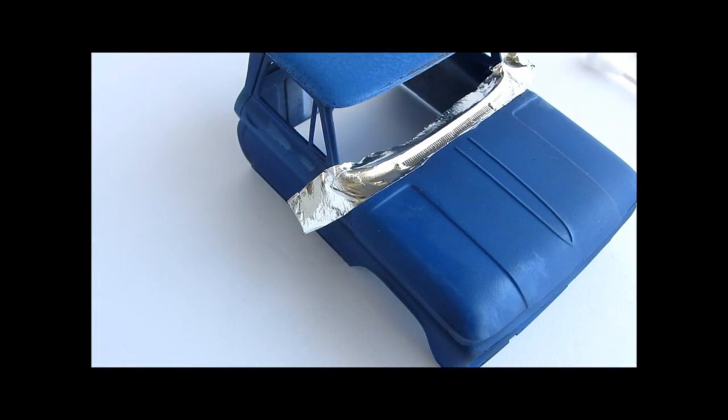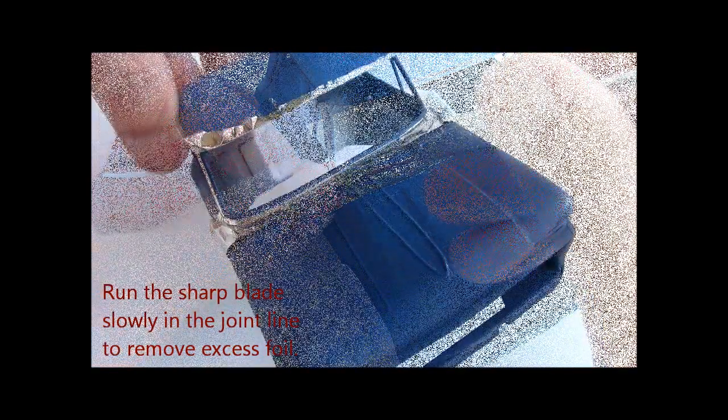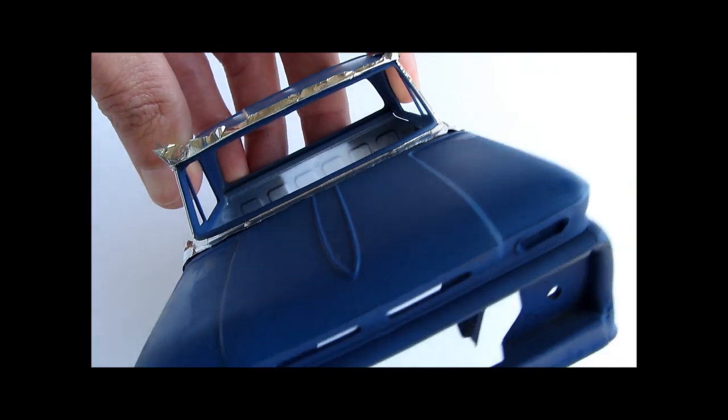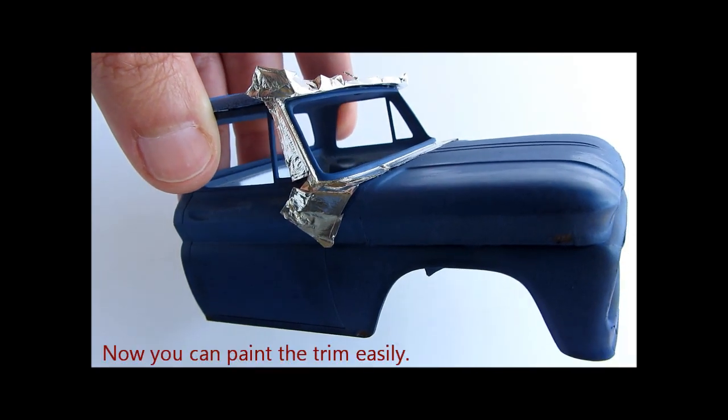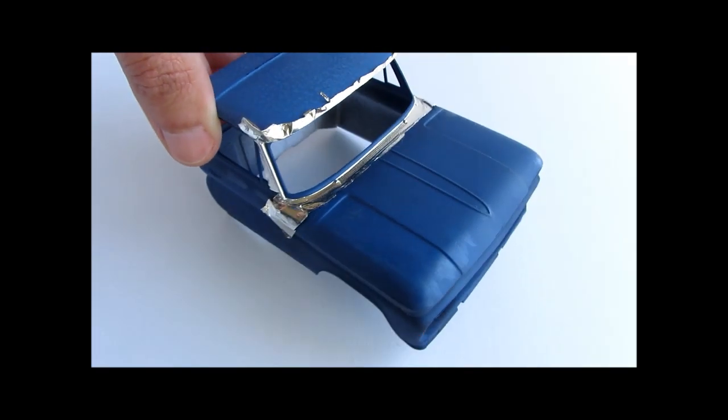When you're satisfied with that, take the sharp blade and remove the excess foil from the areas that you want to paint. At the end it will look like this. You have that nice trim strip and now you can apply paint with a paintbrush all around the area and not worry about paint getting on the hood.